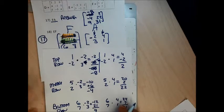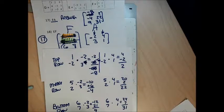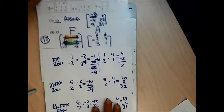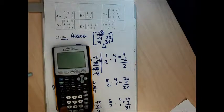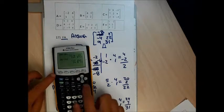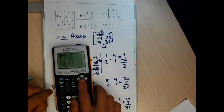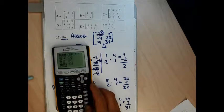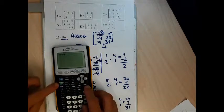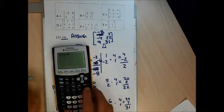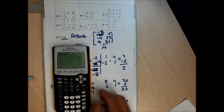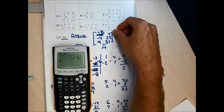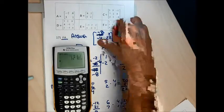You're not responsible for doing matrix multiplication by hand on the test. Let me check on my calculator: second matrix go to F, hit enter, then second matrix hit enter on A — so that's matrix F times matrix A. I see negative 8, 2, negative 4, 22, 9, and 31.